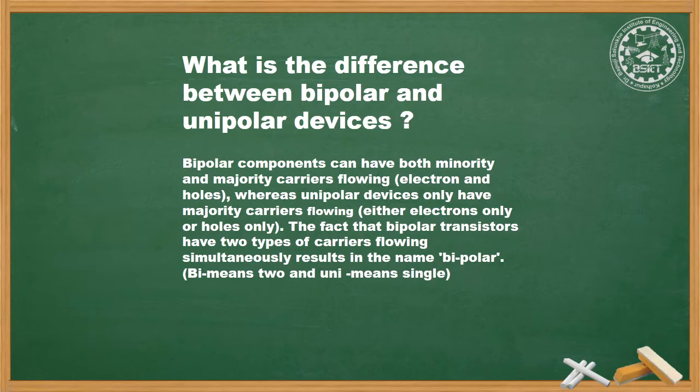What is the difference between bipolar and unipolar devices? Bipolar components can have both minority and majority carriers flowing. When we apply an external voltage source to a component and both electrons and holes are carrying the current, that component is called bipolar. There are two charge carriers contributing the current: electrons are negatively charged particles and holes are positively charged vacant positions. Since both are carrying the current, they are called bipolar components.